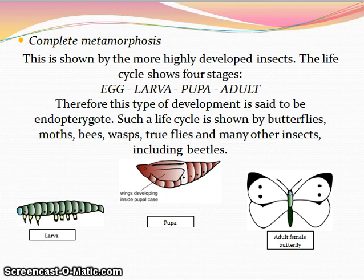Therefore, this type of development is said to be endopterygote. Such a life cycle is shown by butterflies, moths, bees, wasps, true flies, beetles, and many other insects.